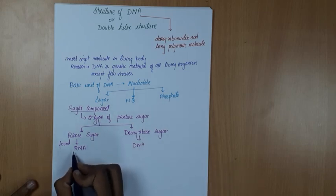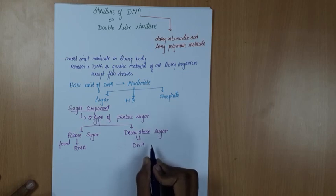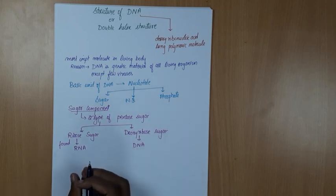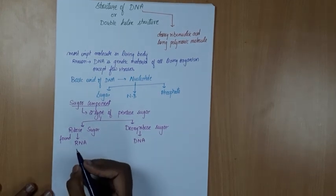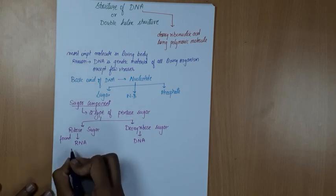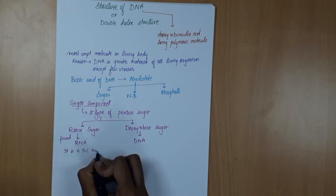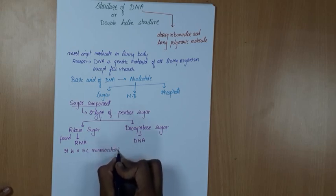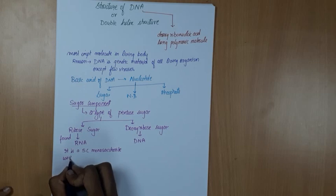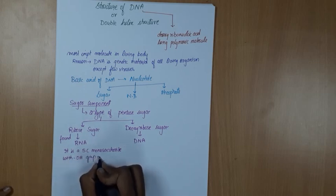RNA stands for Ribonucleic acid and DNA stands for Deoxyribonucleic acid. What is the difference between DNA and RNA? Ribose sugar is a 5-carbon monosaccharide with a hydroxyl group on each carbon.